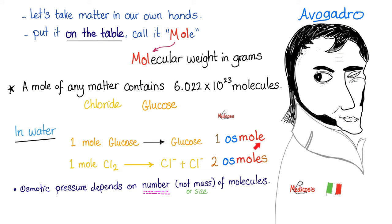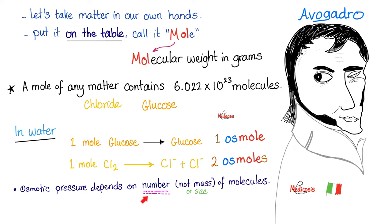Osmolality measures the number of osmoles. One mole of glucose gives just one osmol. But look at Cl₂ — chlorine will give Cl and Cl, that's two osmoles. Osmolality cares about the number of molecules, not the mass, not the size. I don't care that glucose is heavier or sweeter — the only thing that matters is the number of particles.